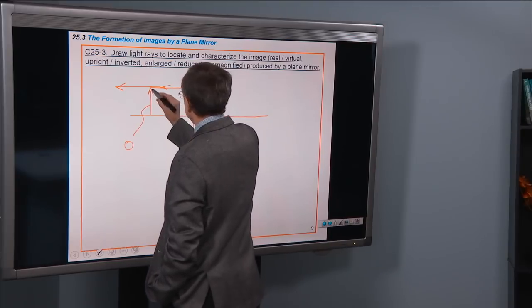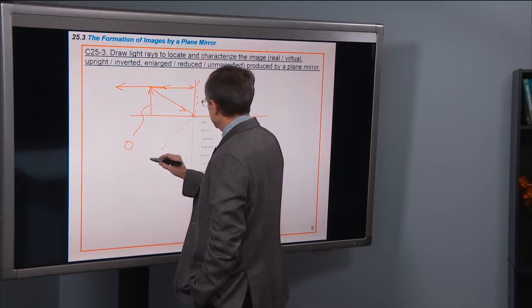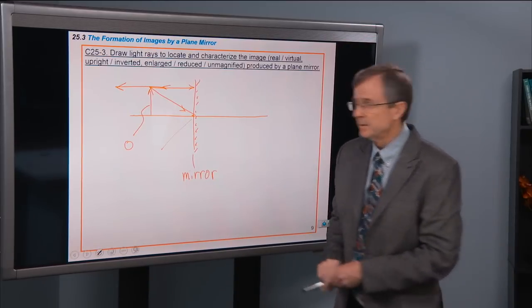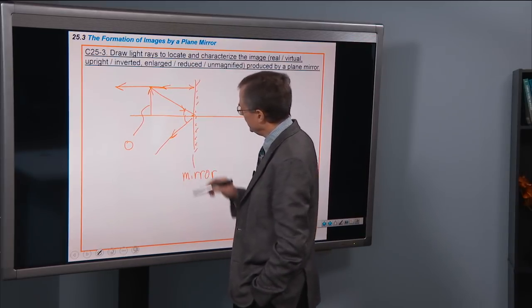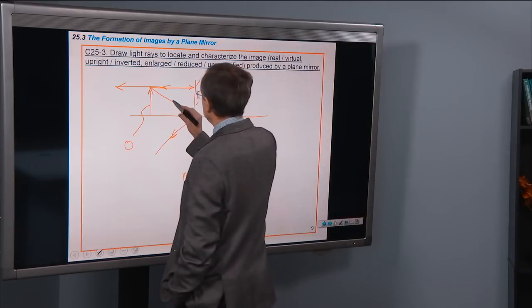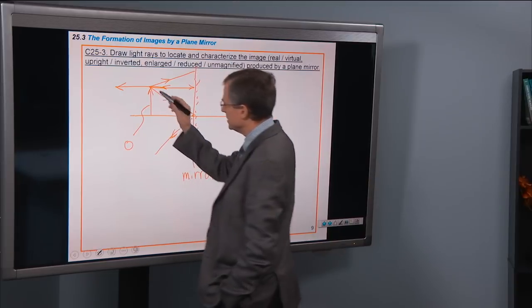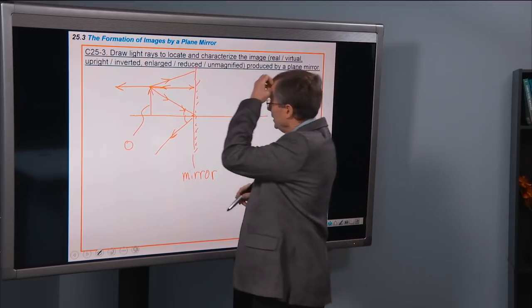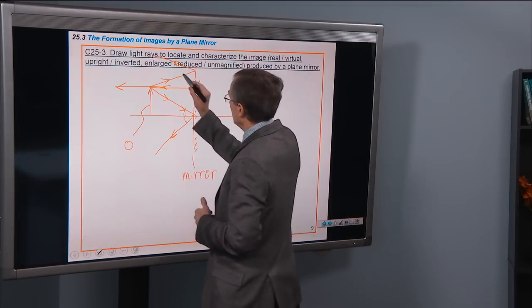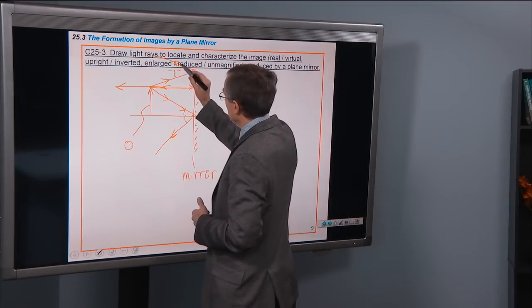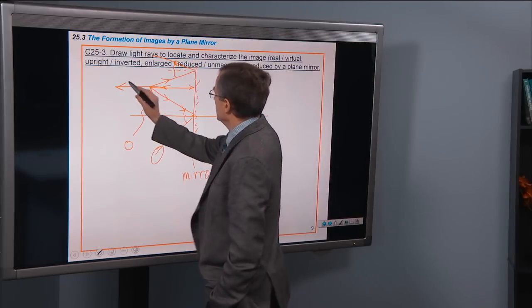What about this one that hits right in the central line? Its angle of incidence equals its angle of reflection. And let's draw another one that goes up like this. We've got light rays going in all directions starting from the top of that chess piece. The ones intercepted by the mirror bounce off with the angle of incidence equal to the angle of reflection. Here's one reflected ray, here's another, and here's another.